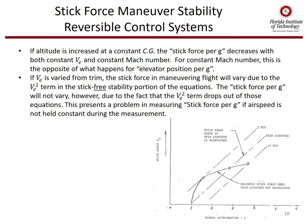If equivalent airspeed is varied from trim, the stick force in maneuvering flight will vary due to the VE squared term in the stick-free stability portion of the equations. The stick force per G will not vary, however, because the VE squared term drops out of those equations. This presents a problem in measuring stick force per G if we don't keep our airspeed constant during the maneuver while taking measurement data.